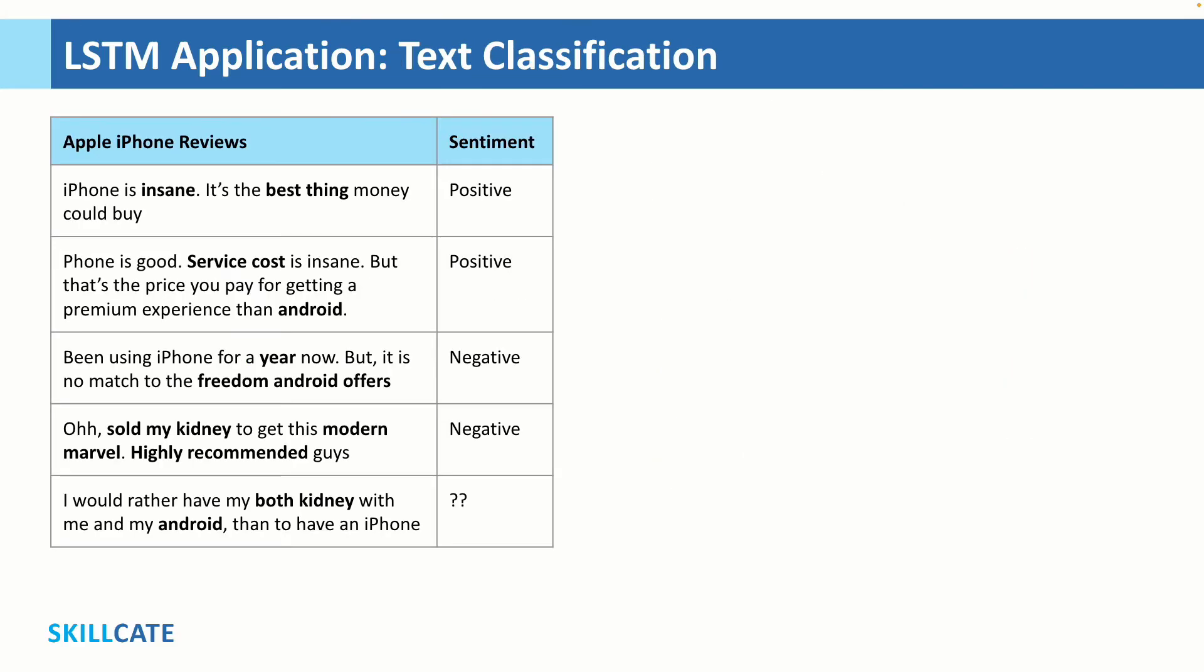Moving on in the case of text classification, let's say this is the labeled training data we use. These are essentially Apple iPhone user reviews along with positive-negative labels. As you may observe, here the positive feedbacks talk about iPhone being value for money, user seems to be okay with the high service cost given the premium experience they are getting when compared to Android. Negative feedbacks talk about how monotonous the iPhone experience is vis-a-vis Android after using it for a year. And then there's some sarcasm over selling kidneys. We all have seen that, right?